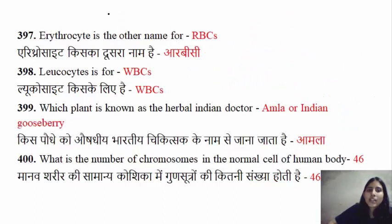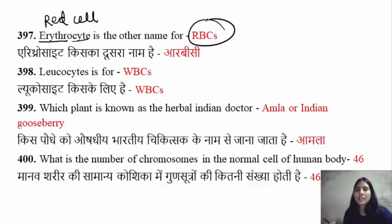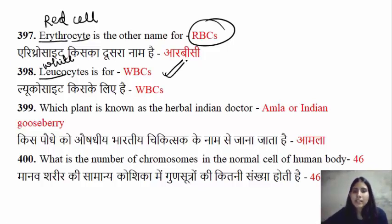Erythrocyte is another name for RBCs. The word 'erythro' means red and 'cyte' means cell. So erythrocytes are red-colored cells — that's why we use the word erythrocyte for RBCs. Similarly, leukocytes — 'leuko' means white or colorless — refers to WBCs. And thrombocytes is another name for platelets.